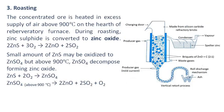Roasting. The concentrated ore is heated in excess supply of air above 900 degrees Celsius on the hearth of a reverberatory furnace. During roasting, zinc sulfide is converted to zinc oxide. A small amount of zinc sulfide may be oxidized to zinc sulfate, but above 900 degrees Celsius, zinc sulfate decomposes forming zinc oxide.